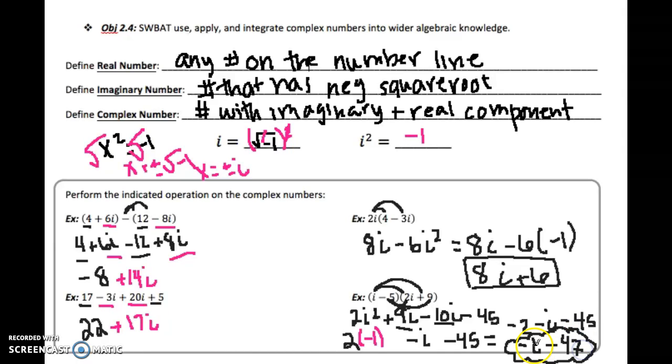Okay, it's kind of tricky to see there that this is negative i minus 47. All right, that's it.